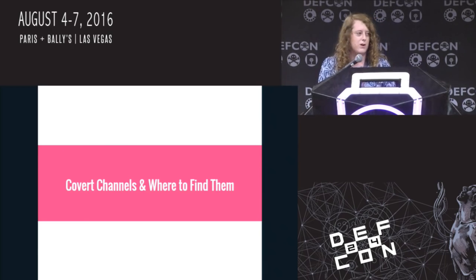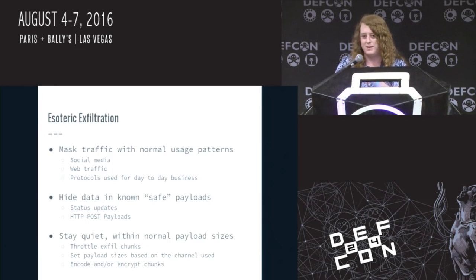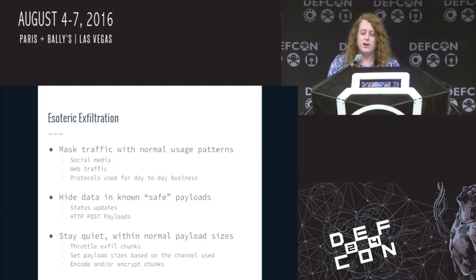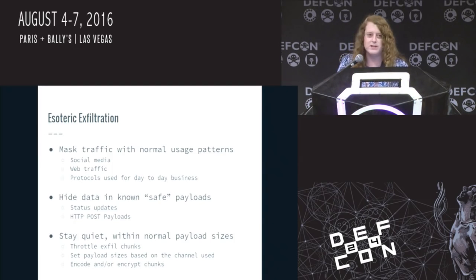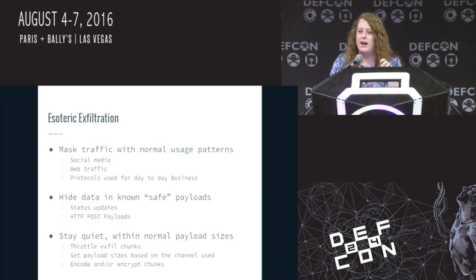Let's talk about covert channels and where to find them. This is kind of where the meat of the talk is going to be because I've done all this stuff, I've done the research, and I've gotten caught. Getting caught is the most exciting part because then you learn how not to do that. The first thing is to mask your traffic with normal usage patterns. If you know a company uses social media, web traffic, or protocols like FTP, HTTP, or HTTPS — knowing that stuff is really important because you can build a model of what a normal employee's traffic looks like and how you can blend in.